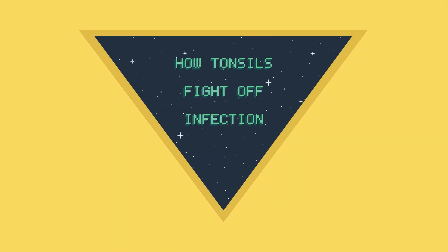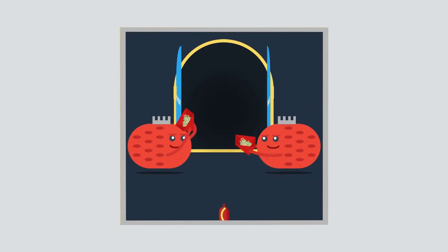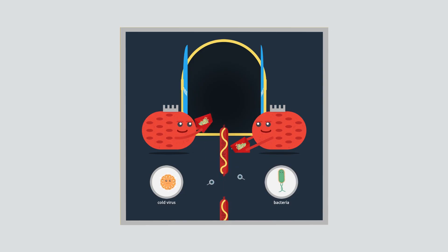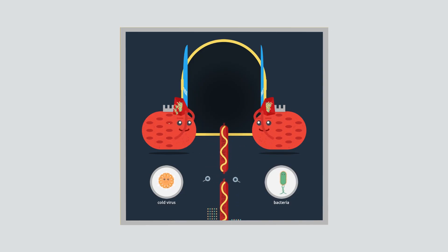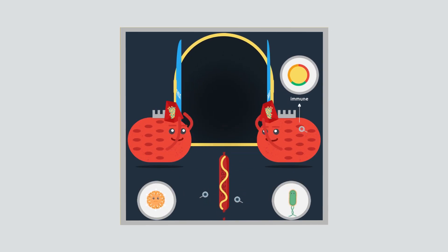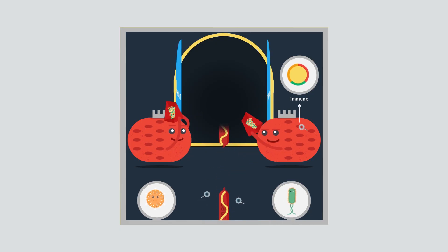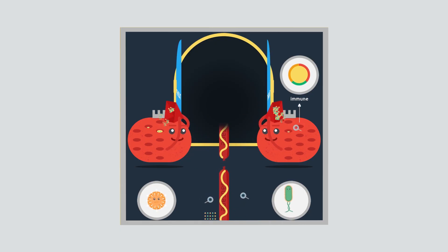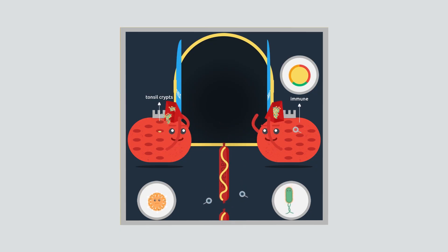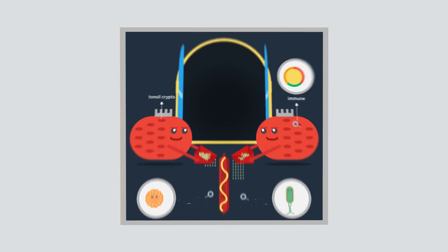How Tonsils Fight Off Infection. The tonsils act like a sentry point for the throat, picking up viruses and bacteria or particles which are breathed in or swallowed and relaying these to the immune system. To help with this role, the surfaces of the tonsils are pitted with a number of little recesses, also called tonsil crypts. These increase the surface area of the tonsils, relaying more viruses and bacteria to the immune system.